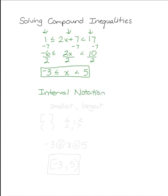For interval notation, you're going to write the smallest number that your answer can be, followed by the largest number that your answer could be, with a comma in between.